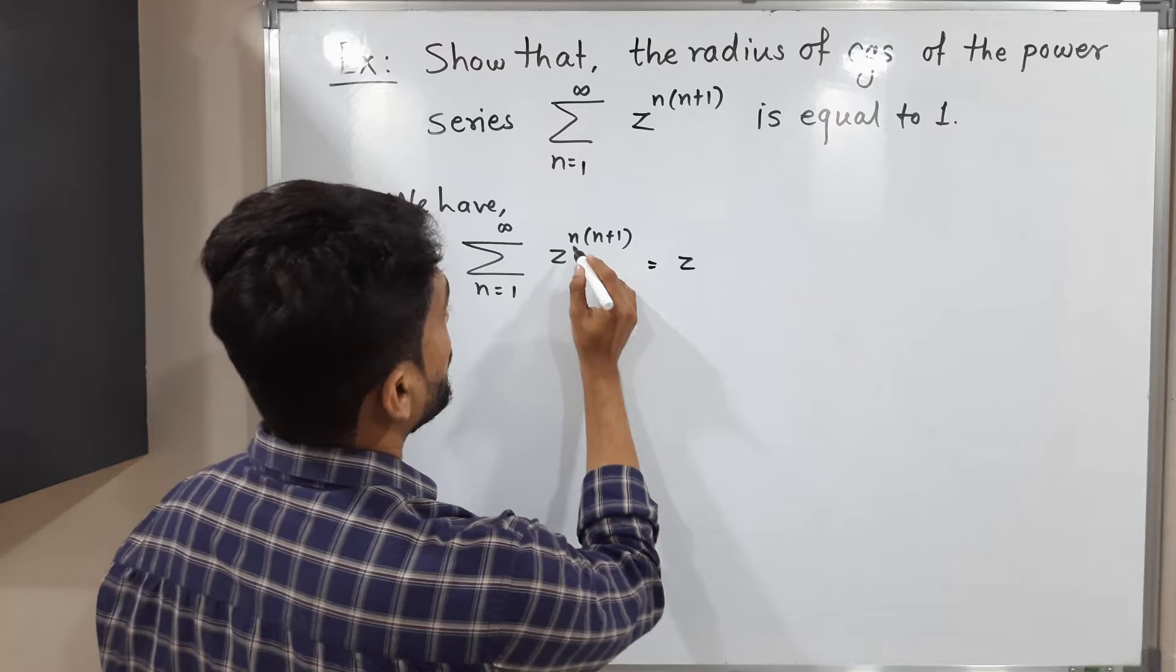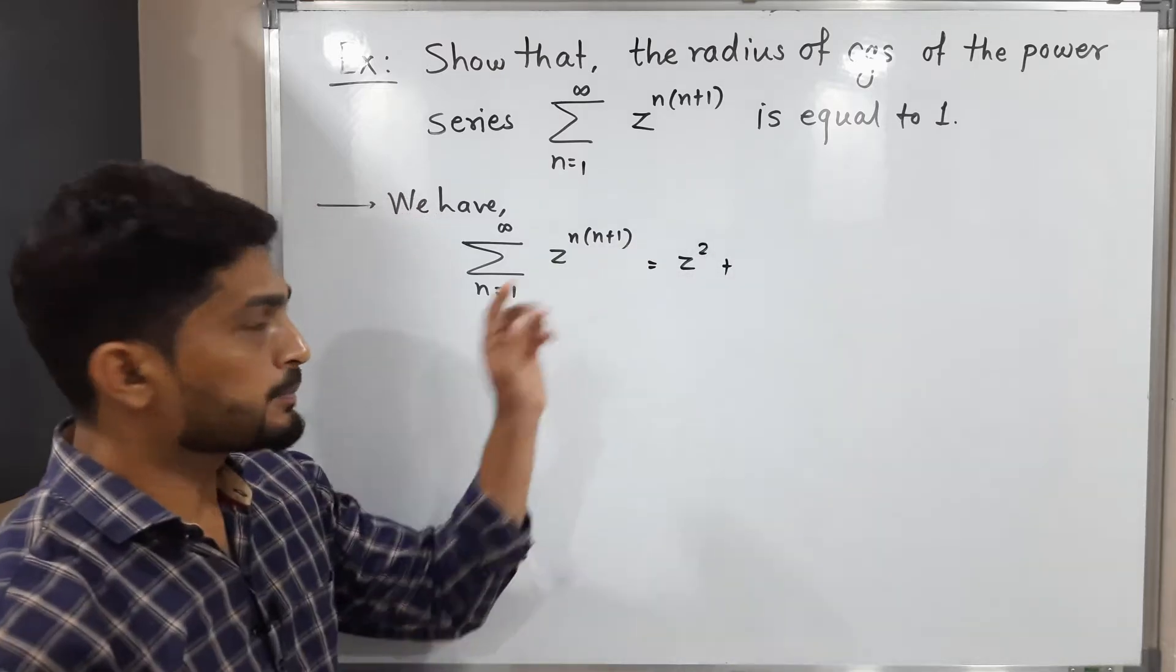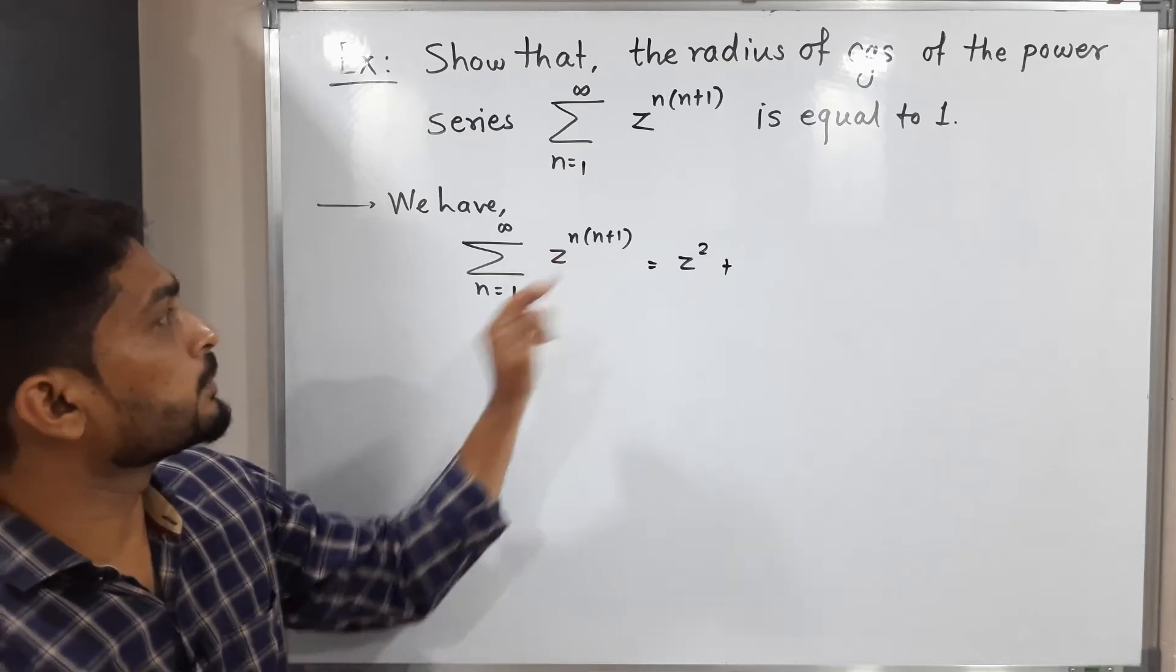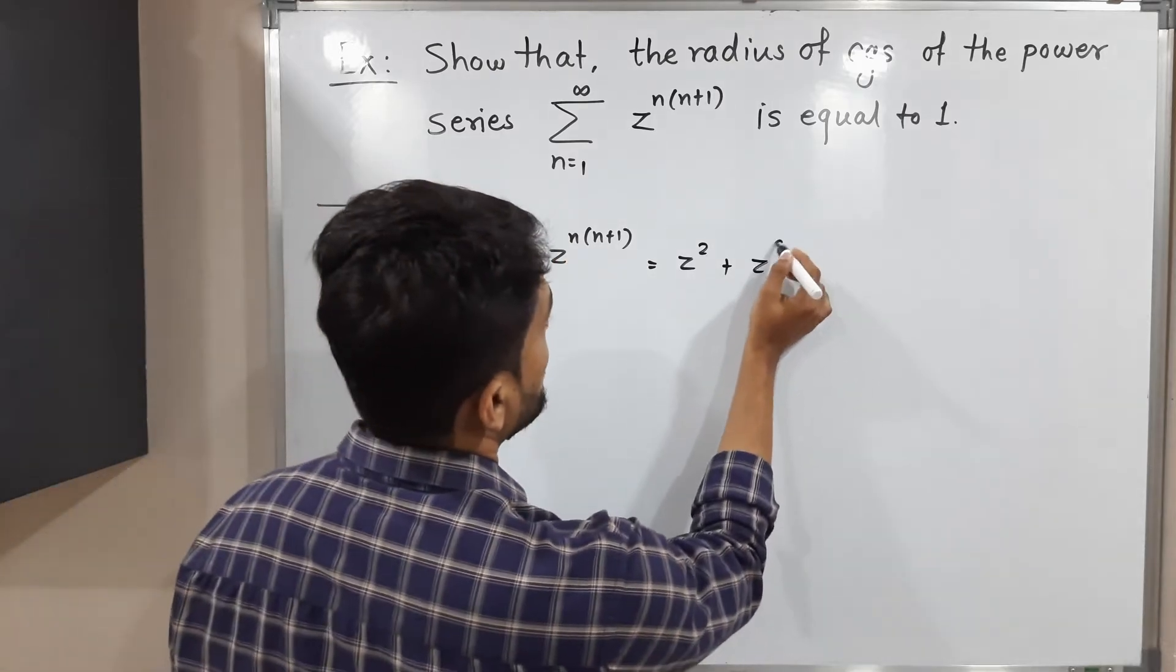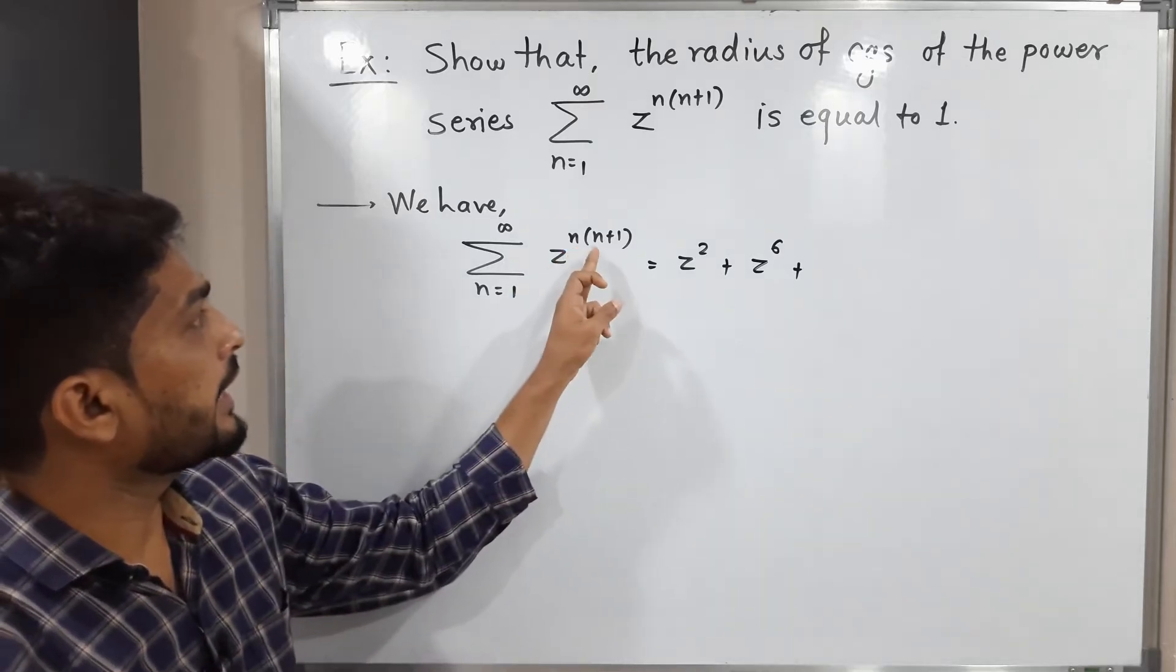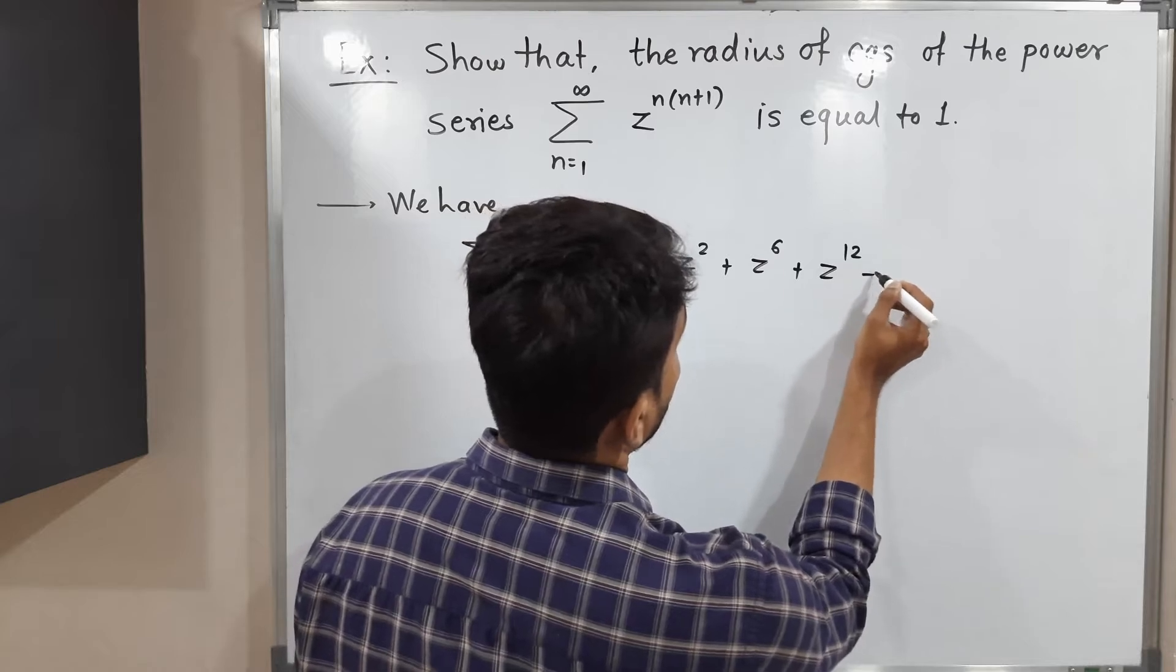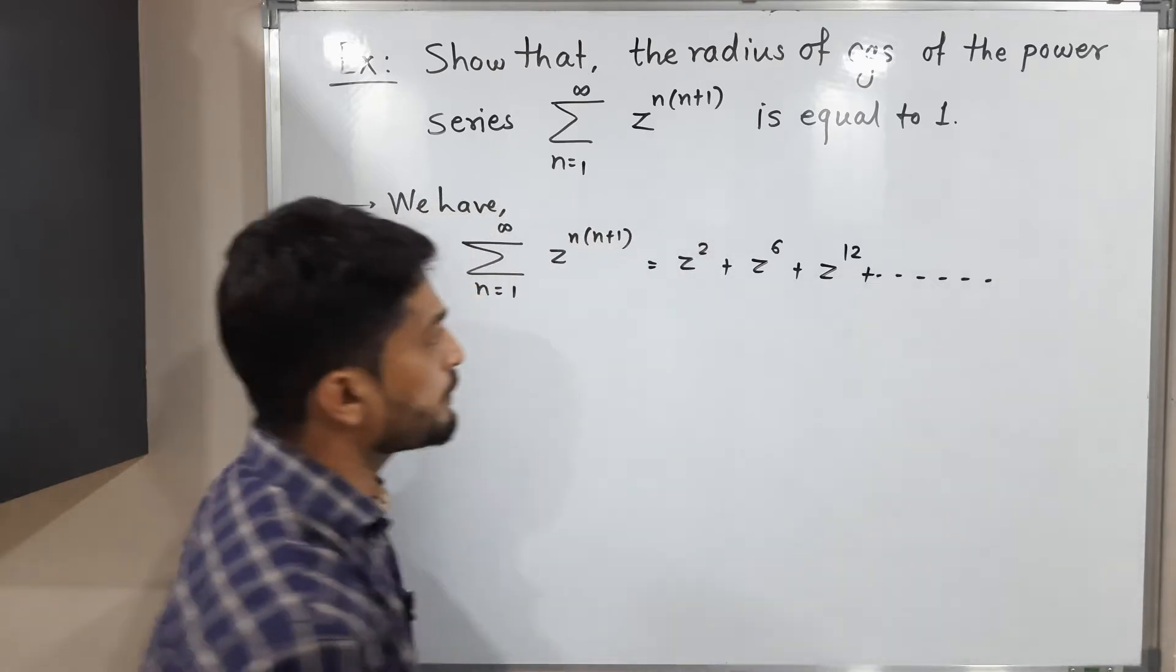This is equal to, let us put n equals 1 here. So we will have z^(1+1=2), so z square. Plus let us put n equals 2, so 2 and 2 plus 1 is 3, that means z raised to 6. Let us put n equals 3, so 3 and 3 plus 1 is 4, that means z raised to 12, plus and so on. So this type of series we have.